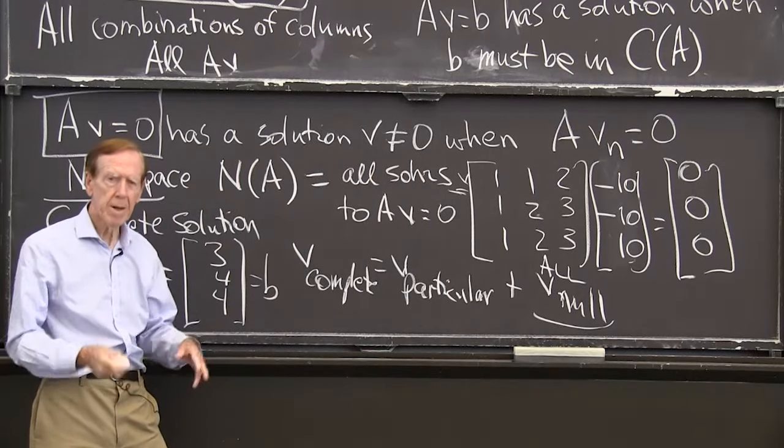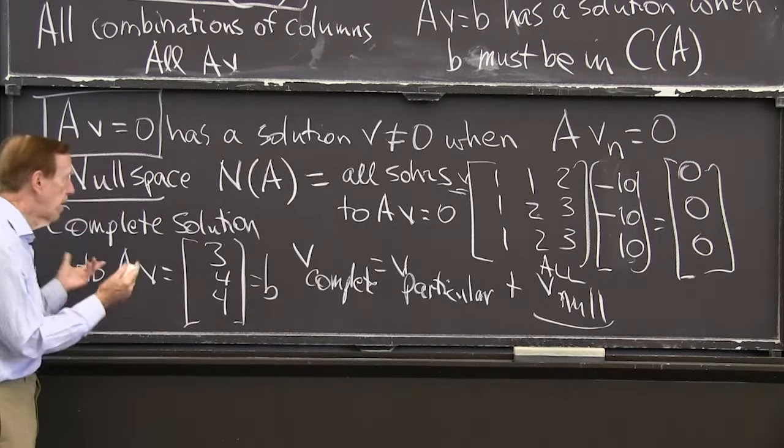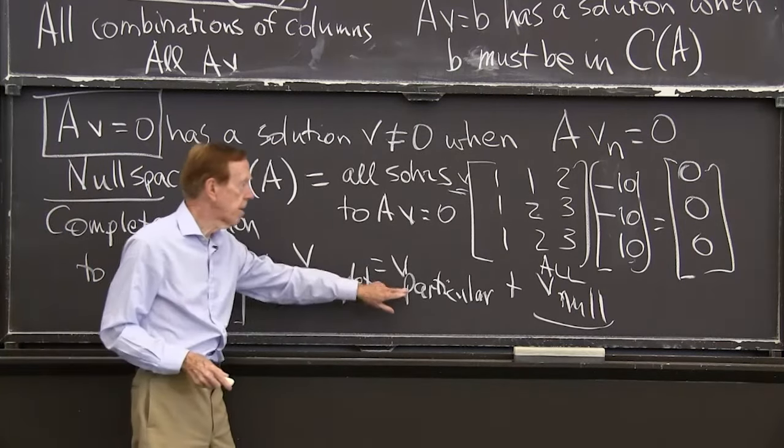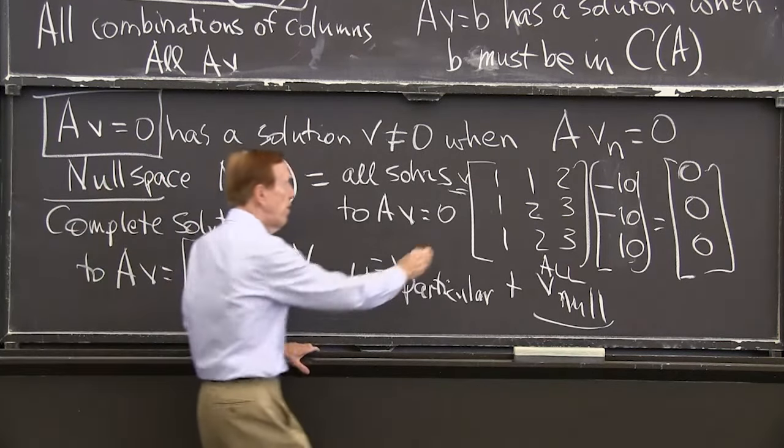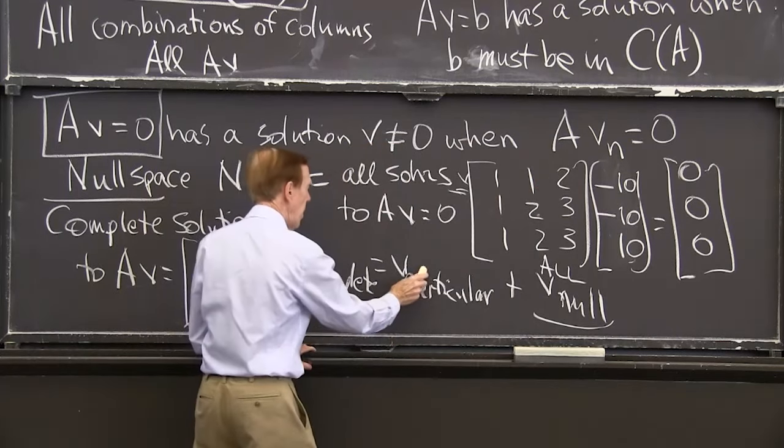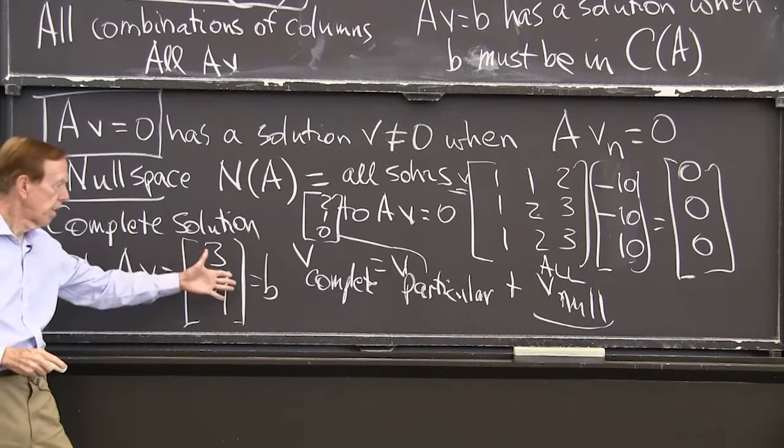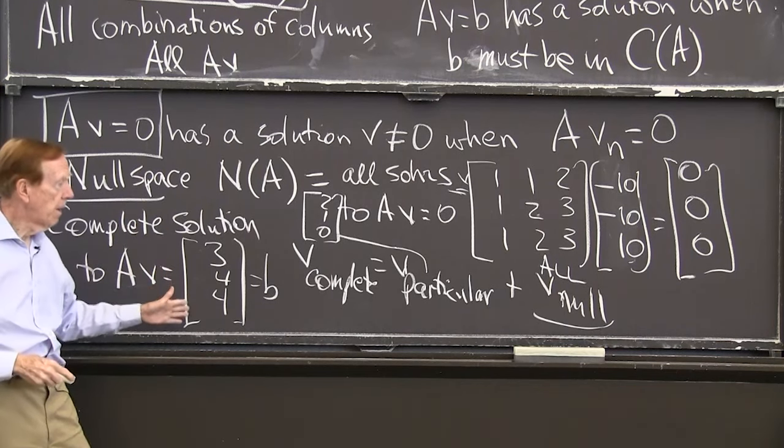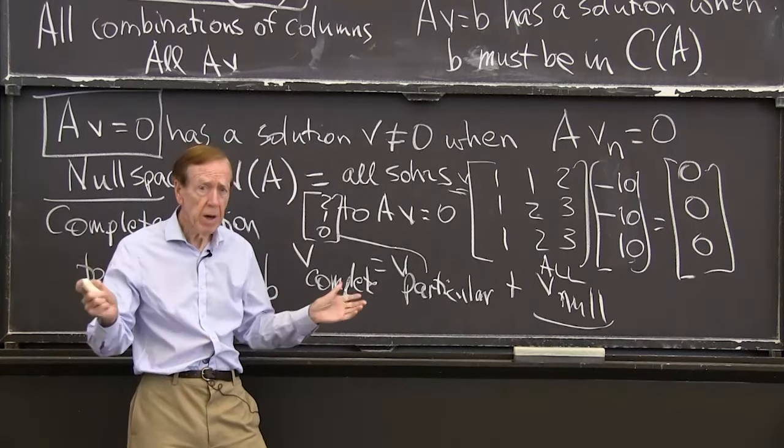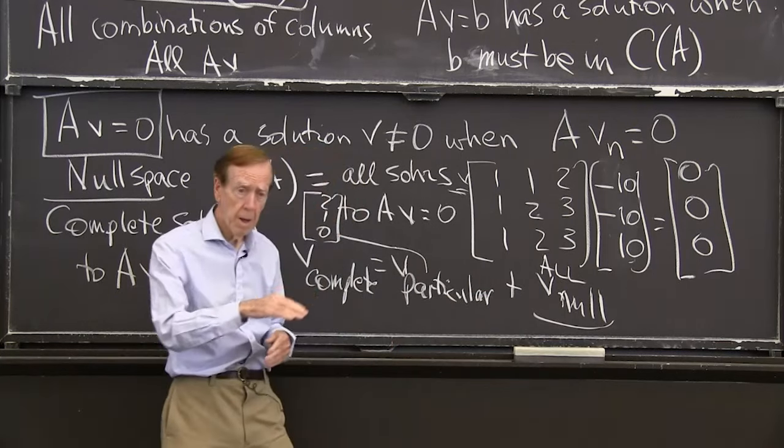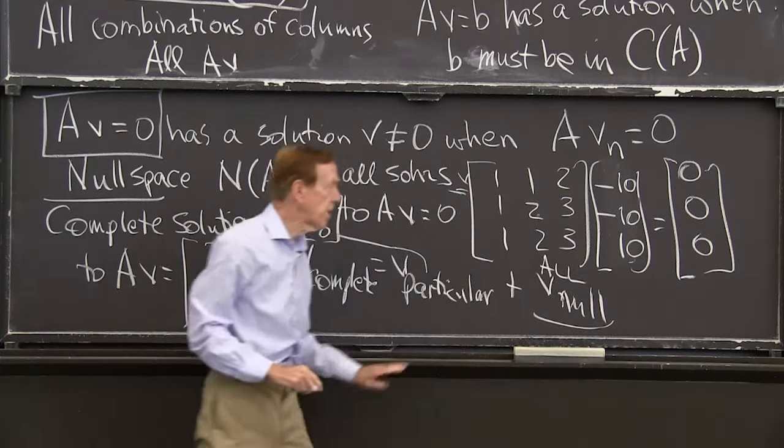One particular solution with that thing would be V particular could be two, one, zero. It works for that particular B. Two of the first column, one of the second. Now, then we could add in anything in the null space. So we have infinitely many solutions here. We've got one solution plus added to that a whole line of solutions. That's all the null space would be all vectors like that.